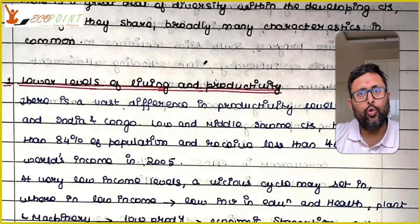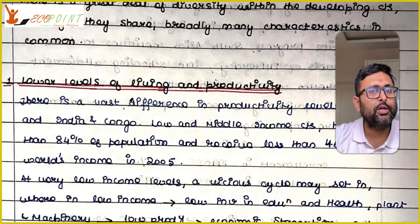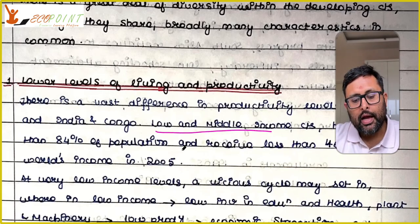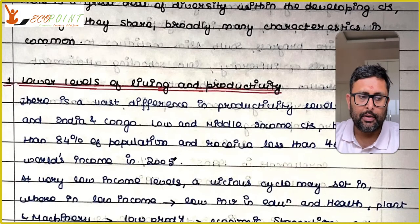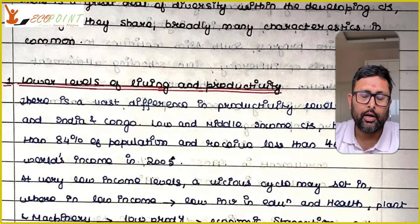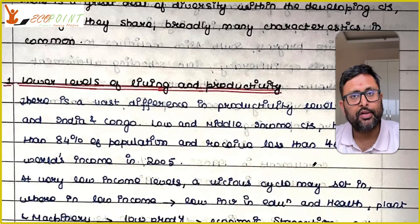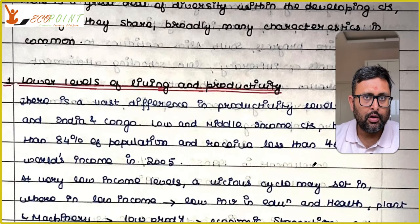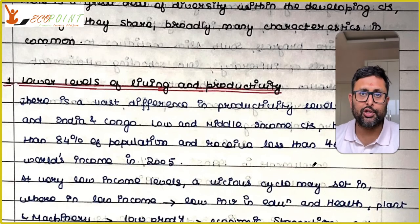Mostly these low and middle income countries are hugely populated. In 2005, 84% of the world's population was living in these middle and low income countries, but only around 46% of the income being generated was going to these lower and middle income countries. So you can see the difference — how little income is going to 84% of the population.